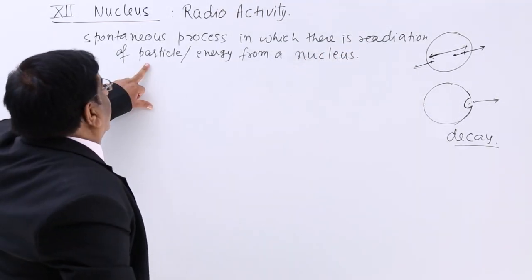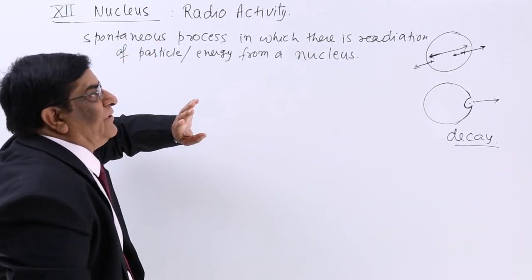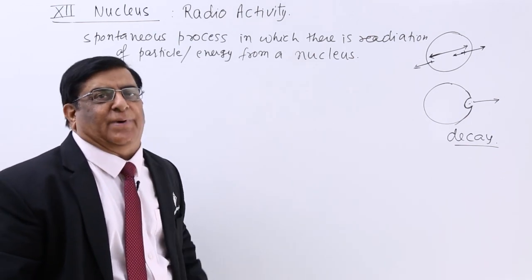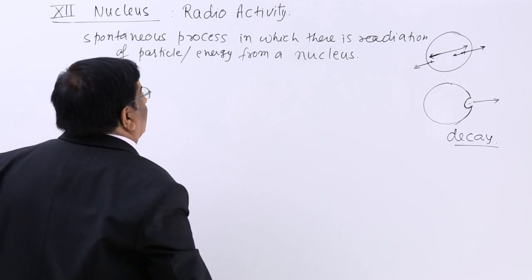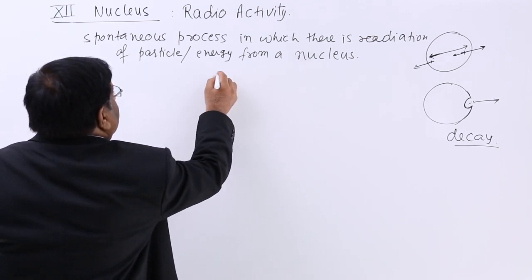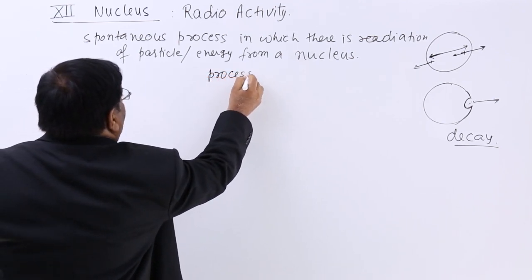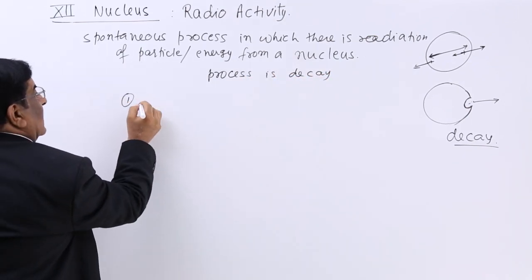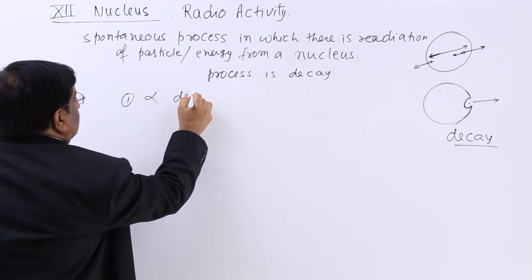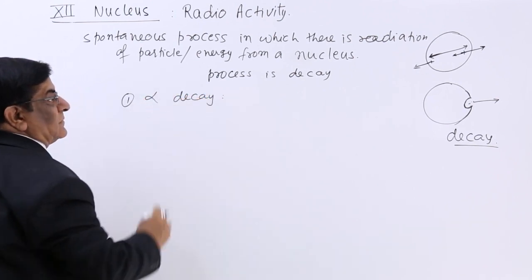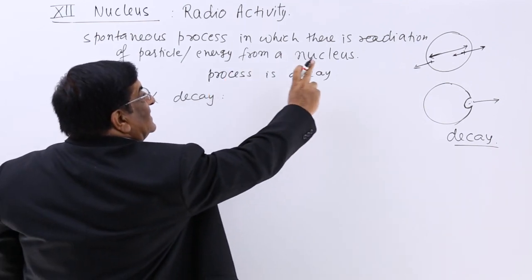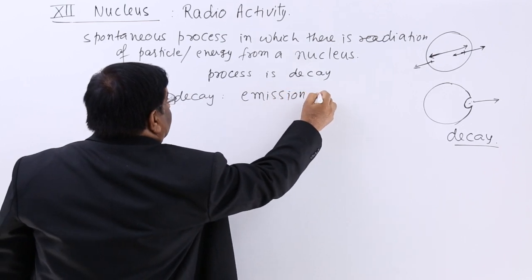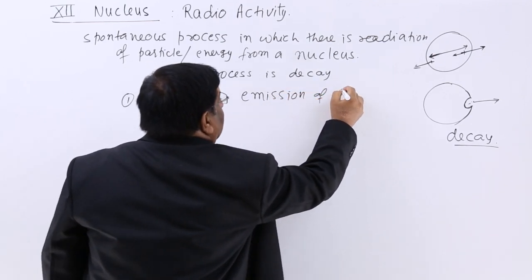Radioactivity is spontaneous — by itself. We do not have to trigger it and nothing else triggers it; it happens automatically. We call this process decay. There are three types of decays. The first is alpha decay, which is the emission of a helium nucleus.